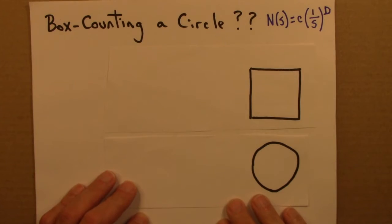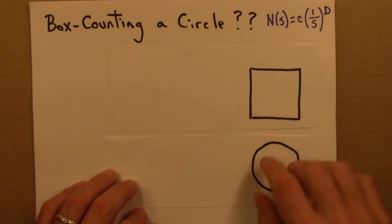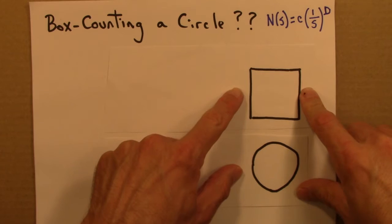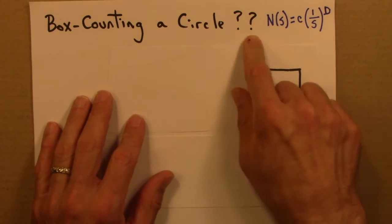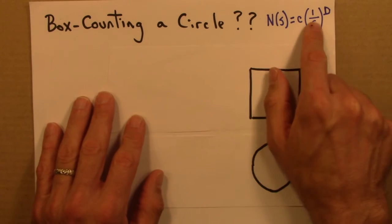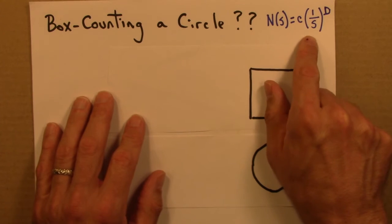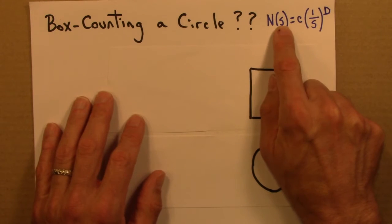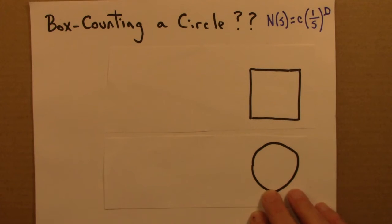Let's apply box counting to a circle and see what happens. I'm going to do a square and a circle side by side to contrast the two situations. I wrote over here the equation for the box counting dimension: N(s) = C₁ / s^d, where C is some constant that doesn't depend on s, s is the side length of the box, and N(s) is the number of boxes needed to cover the shape.